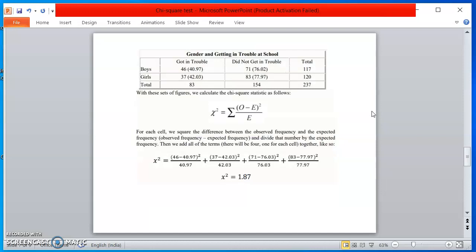Now, next what we need to prepare. You can prepare the observed frequency and the actual frequency and the expected frequency. Total frequency for boys was 46, and the expected frequency is 40.97. Similarly, you can see all the scores over here.